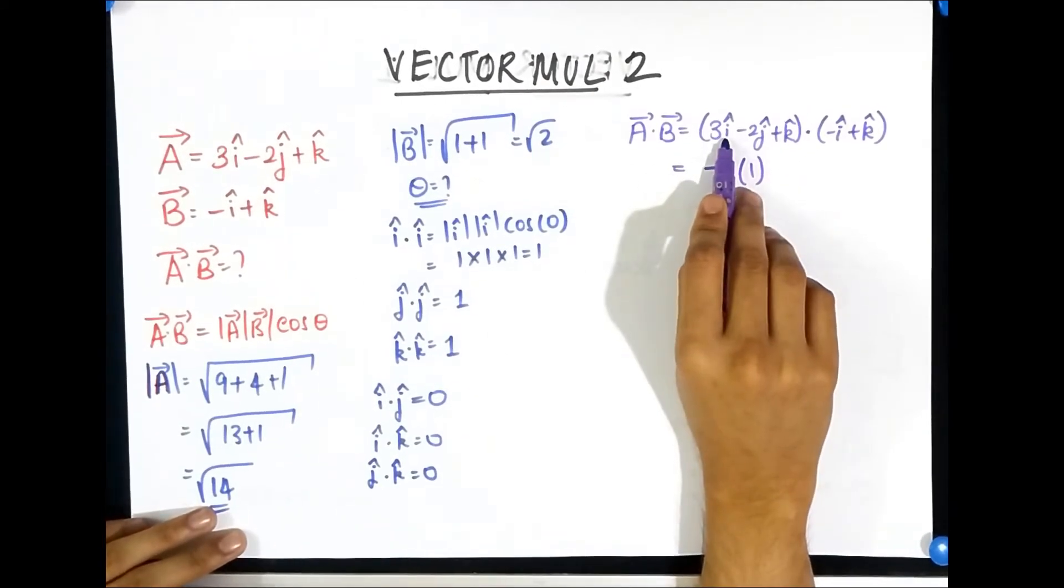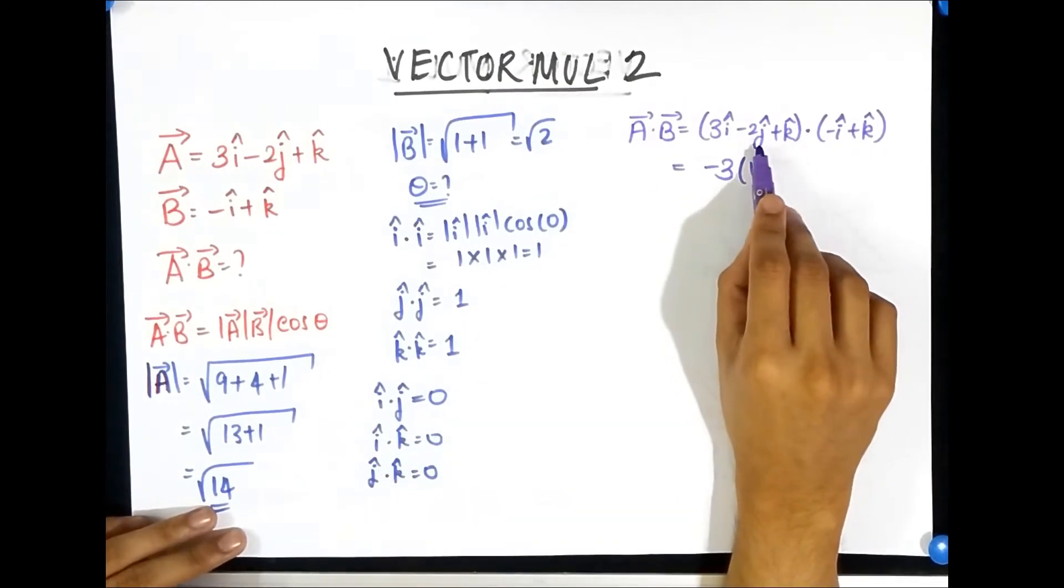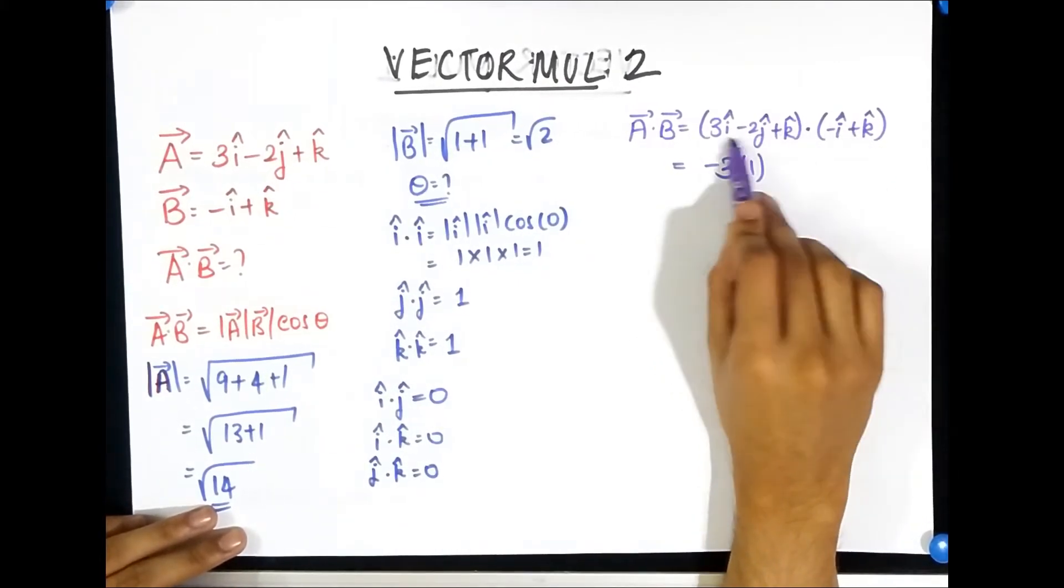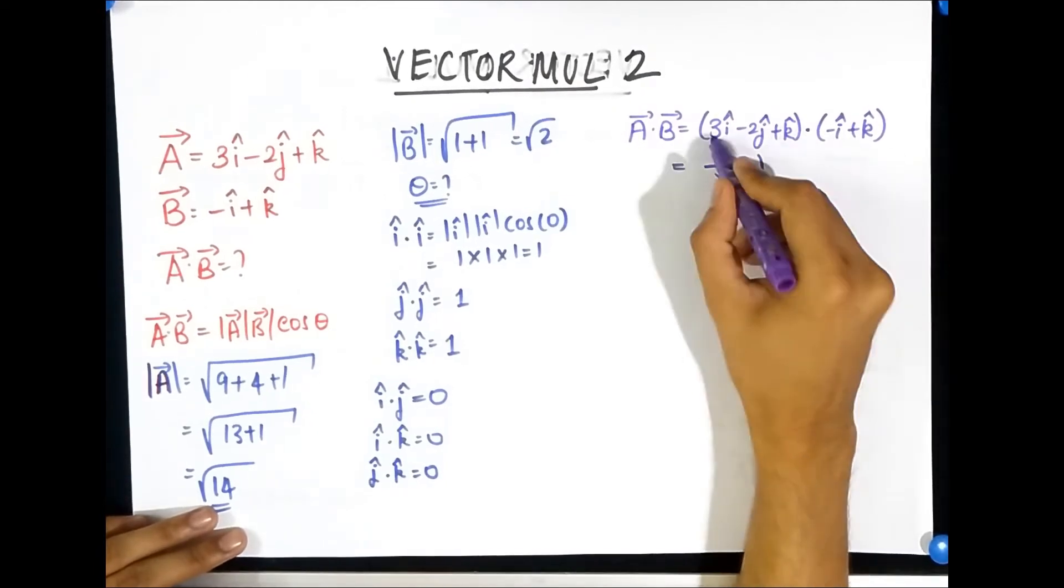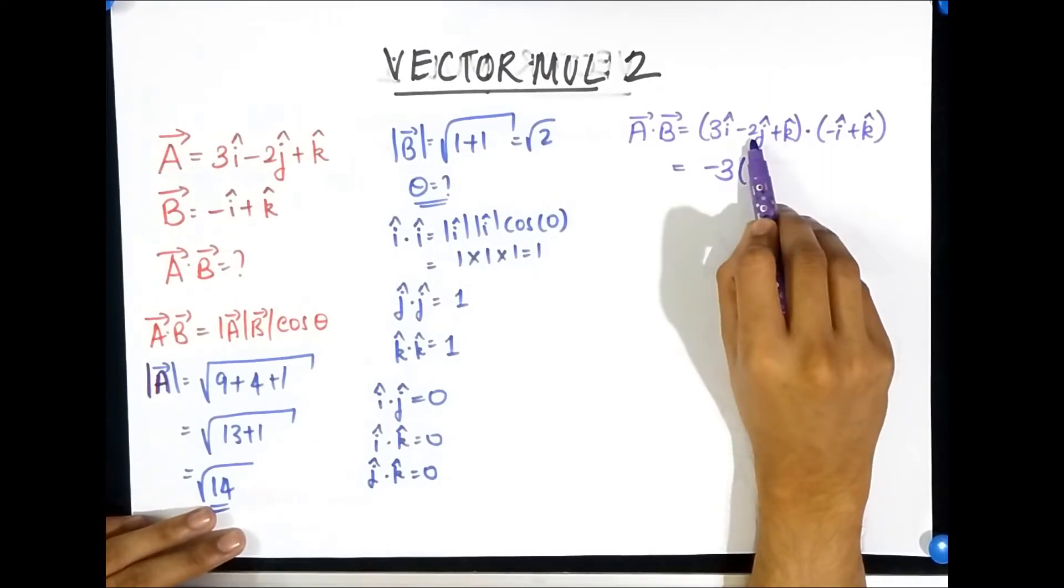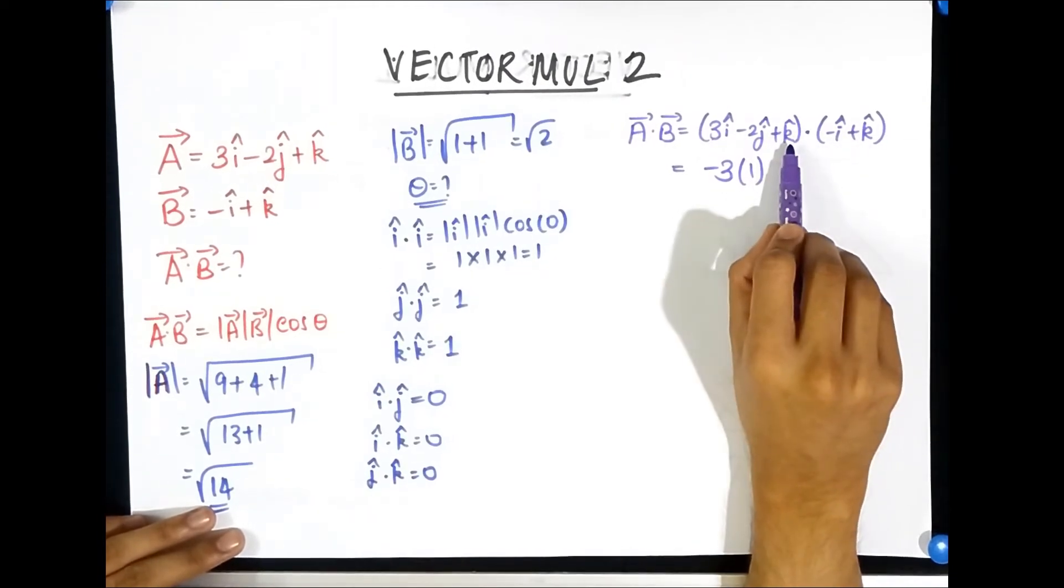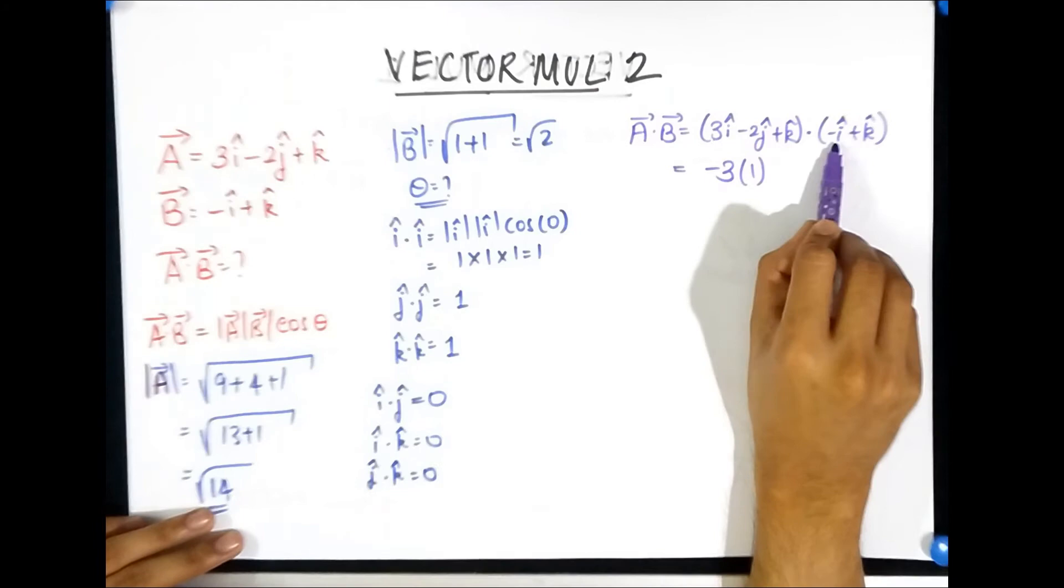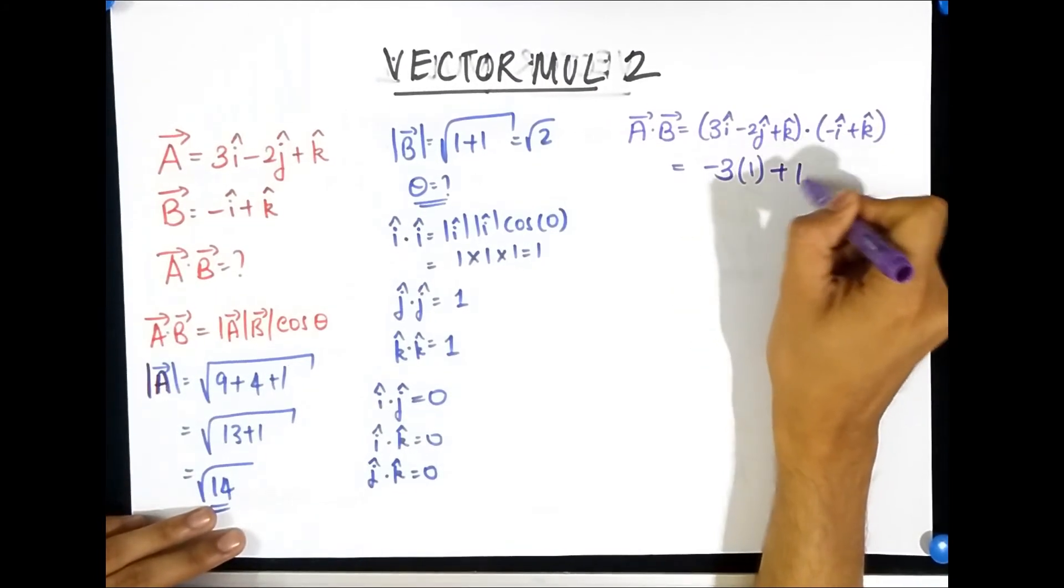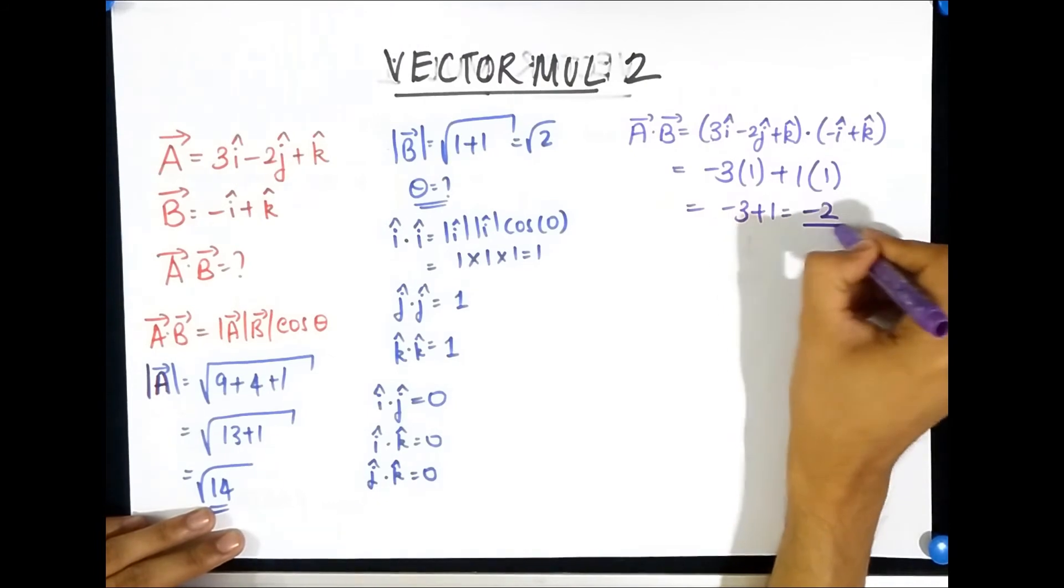What happens when you take 3i dot k, well that's zero because we saw i dot k is zero. So in simple terms whenever you're dotting, you just make sure you dot the respective unit vectors and you can forget about the other ones. Next comes minus 2j and minus i, well that's going to dot and give me zero, and minus 2j and k, that's also going to give me a zero, so nothing. Then I have a k and a minus i dot will give me a zero, and then I have a k dot k, well there's 1 into 1, that's just 1. So I get minus 3 plus 1, I get the answer as minus 2.